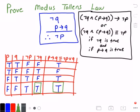So now if not Q is true and P implies Q is true, then not P is true. And so now let's look at not P, which is in this column here. And we can see that it is indeed true, like we expected. So this basically proves the Modus Tollens law.